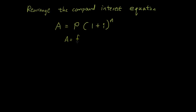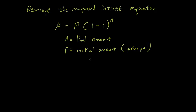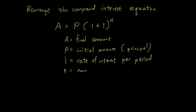I'll still give you a brief intro to all of these variables. A is the final amount. P is the initial amount of money that you put in the bank — it's called P because it's the principal. I is the rate of interest per period — that's a very important concept, because it doesn't matter what period you use, whether daily, monthly, or yearly, as long as you use the same period for N. N is the number of periods.